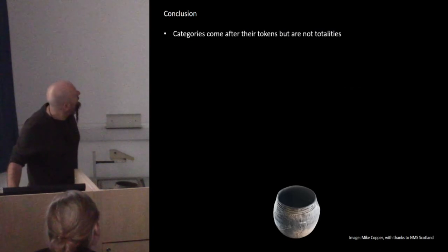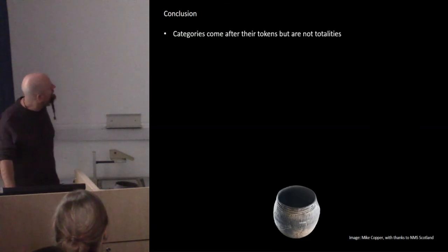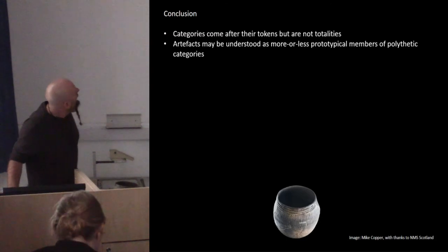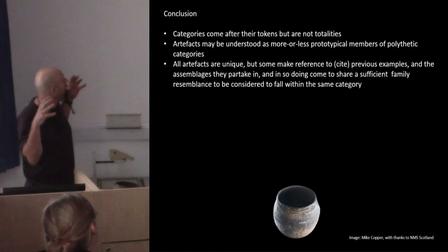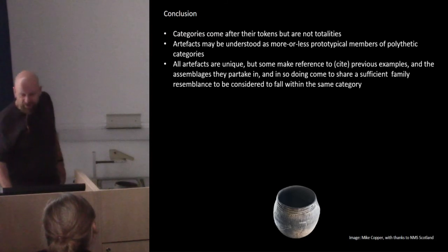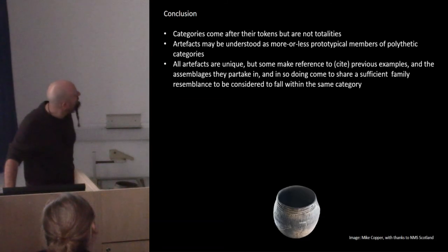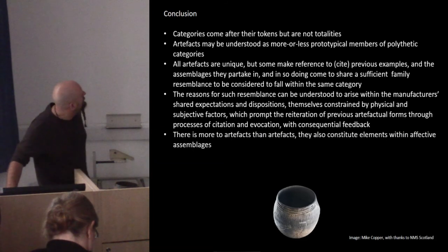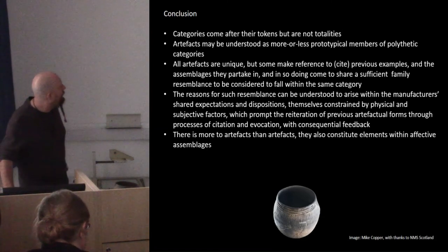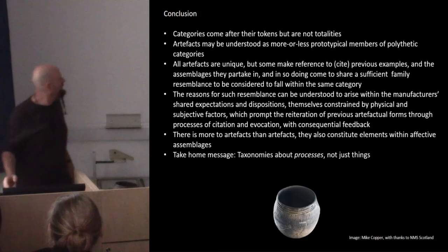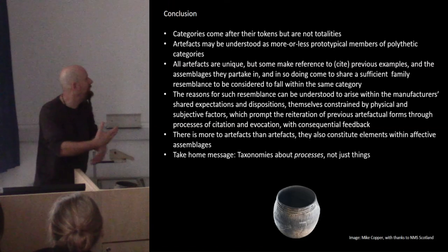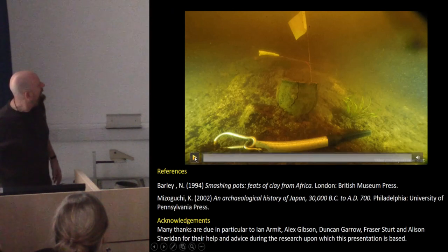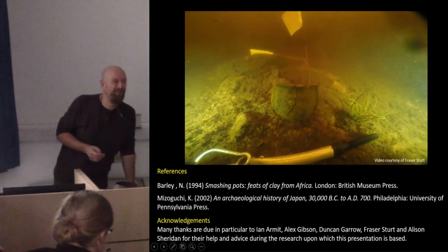To summarise: categories come after their tokens — they can't pre-exist. You can't have a category of pot with no pots to put into it. But they're not totalities, although they do have emergent potentials. Artefacts within the category can be more or less prototypical; they don't have to belong or not belong. Although all artefacts are unique, they do cite, they look back to other forms, which leads to this family resemblance through time. We can look at the factors constraining it — something archaeologists are particularly good at doing. Artefacts are only one part of larger, higher-level assemblages. My take-home message is that taxonomies are processes. We're looking at iterative behaviours and continuities of tradition, the residue of which forms the basis of our own particular taxonomic categories.